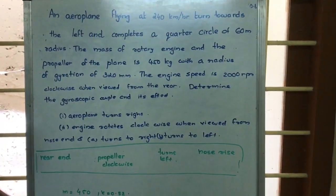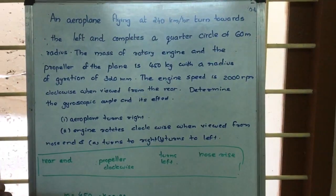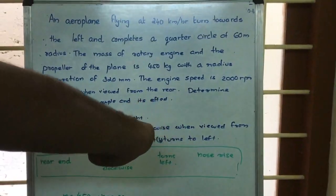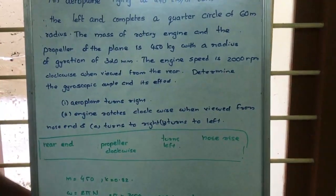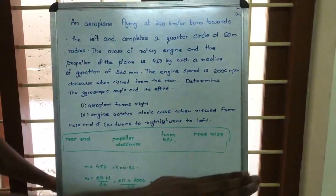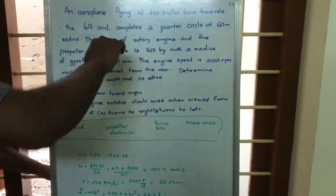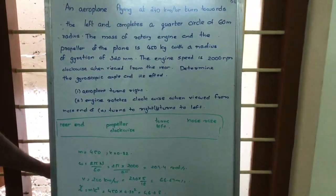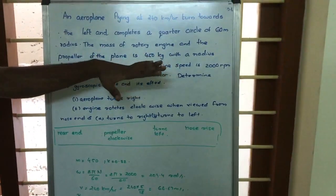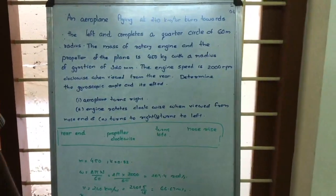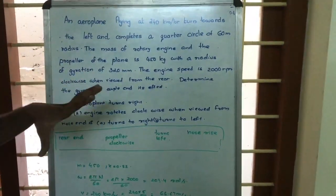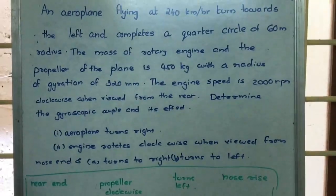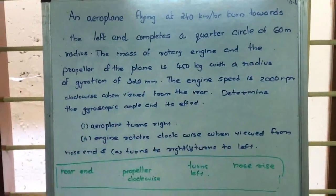Here, there is an aeroplane flying with a velocity of 240 km per hour and it turns towards the left, completing a quarter circle turn of 90 degrees. The turning radius is 60 meters. The mass of the rotary engine and propeller — that is, the mass of the aeroplane — is 450 kg. The radius of gyration is 0.32 m, the engine speed is 2000 RPM, and the propeller is rotating clockwise when viewed from the rear end.